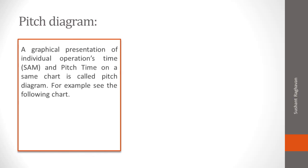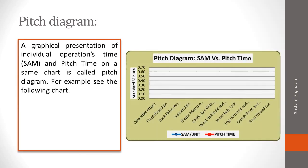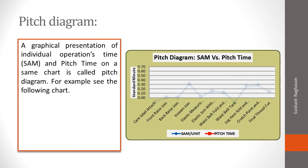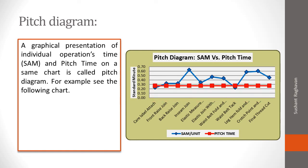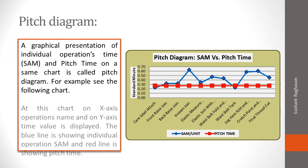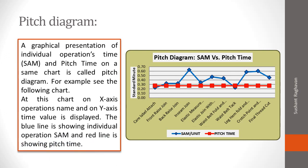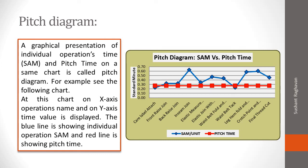A pitch diagram is a graphical presentation of individual operator's time, SAM, and pitch time on the same chart. For example, see the following chart — on the x-axis, operation names are displayed, and on the y-axis, time values are shown. The blue line shows individual operation SAM and the red line shows pitch time.